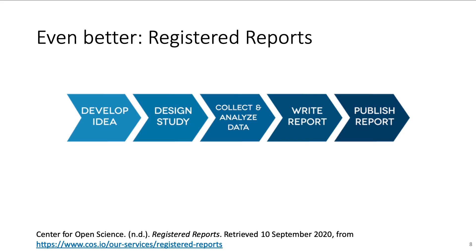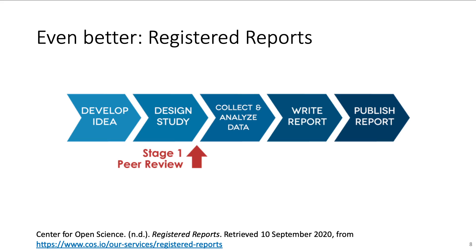Somewhat a combination of preprints and pre-registrations is the Registered Report publication format. The idea is to split the publication process in two parts. Like always, researchers have to develop an idea and design a study. However, before starting to collect data, they write up the introduction and methods of the planned study and submit them to peer review at a journal. The so-called Stage 1 Registered Report manuscript is only evaluated based on the quality of the research question and the proposed methodology, but not on the results. Like any manuscript submission, the Stage 1 manuscript can be accepted, rejected or subjected to further revisions. Should the manuscript pass Stage 1 peer review, it receives in-principle acceptance.